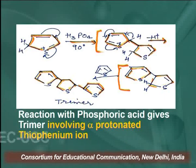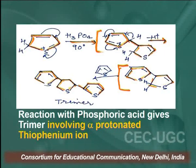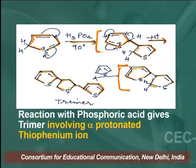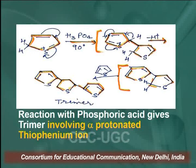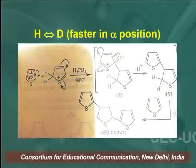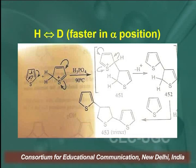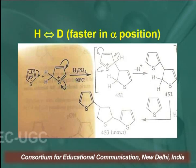The reaction with phosphoric acid gives a trimer involving the alpha-protonated thiophenium ion, where carbon-carbon bond formation takes place at the C2 carbon atom. This shows that protonation in thiophene, as in pyrrole, takes place at the C2 carbon atom, which is thermodynamically favored. Deuterium exchange is also very fast at the alpha positions.